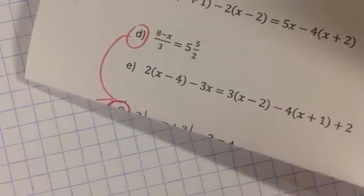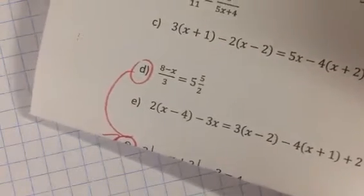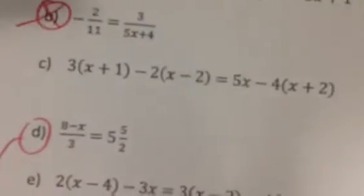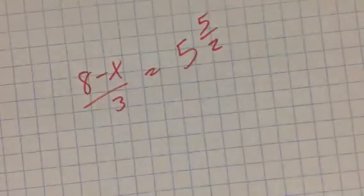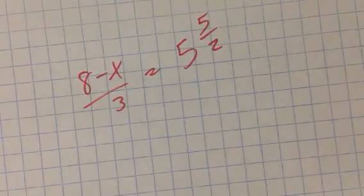Now, for the I Do, I picked two problems, one of each type that you guys are going to be expected to do. It is here: 8 minus X over 3 equals 5 and 5 halves, which is a really odd turn of phrase, but okay.